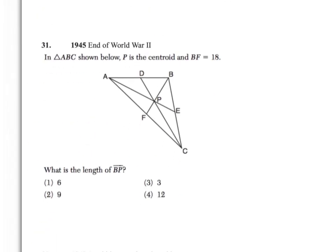Question 31 involves a centroid of a triangle, and there's a relationship with the pieces involved. Remember that the smaller piece is always half as big as the larger piece on each median. For example, PE is half as big as AP, and DP is half as big as PC.